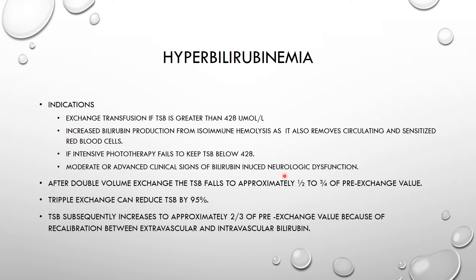Moderate or advanced clinical signs of bilirubin-induced neurologic dysfunction are also indications for double volume exchange transfusion. The TSB falls to approximately half to three-quarters of the pre-exchange value. If a triple exchange is performed, this can reduce TSB by 95%. TSB will subsequently increase to about two-thirds of the pre-exchange value because of recalibration between extravascular and intravascular bilirubin.